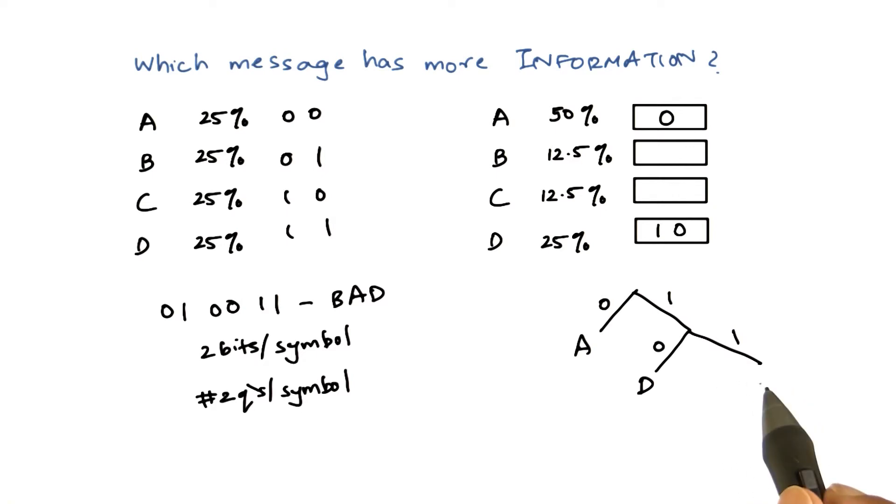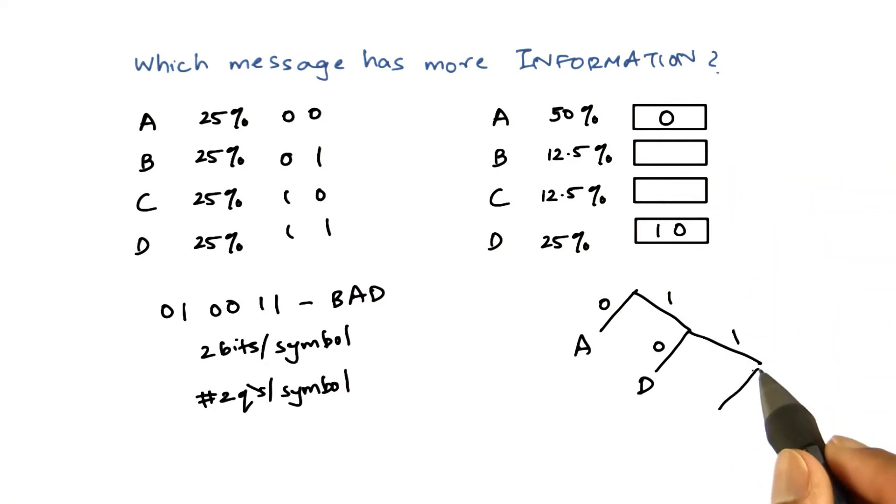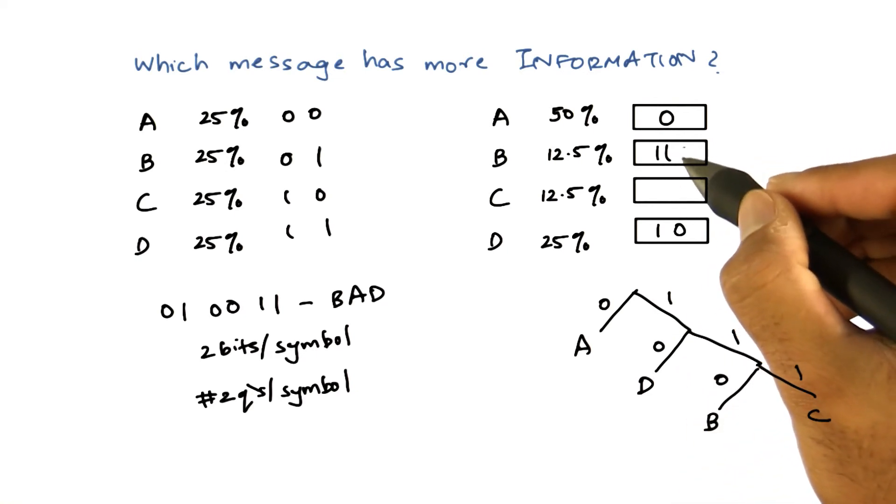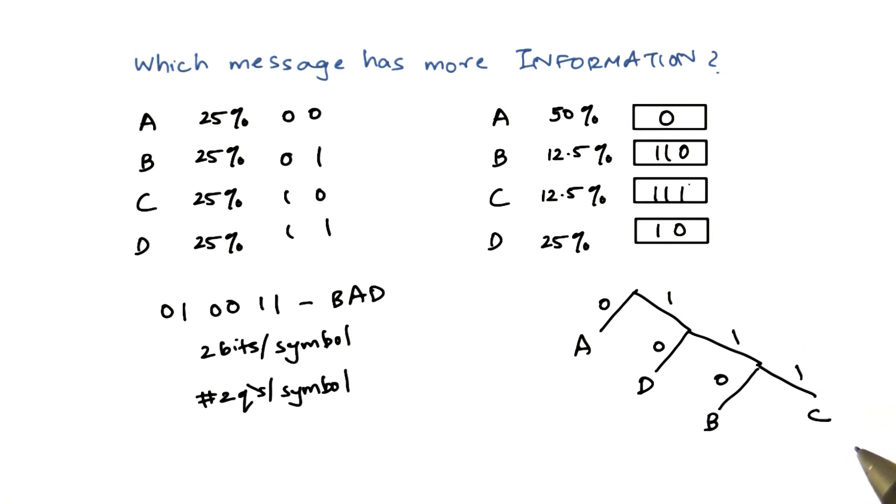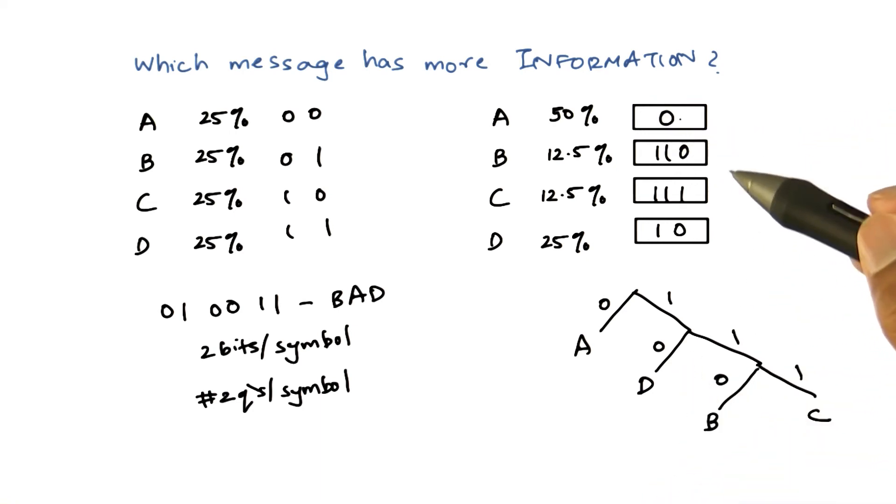So we need to differentiate between them using another symbol. So let's do that using 0 and 1 again. So this can be B and this can be C. So B is basically 1, 1, 0 and C will be 1, 1, 1. Now, have we actually saved any bits per symbol? Have we saved the number of questions we ask? Yes, because A occurs more frequently and we need to ask only one question. But what is the exact number of questions we have to ask for symbols?